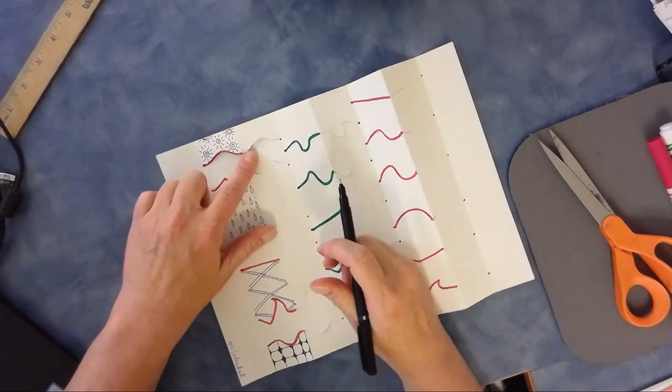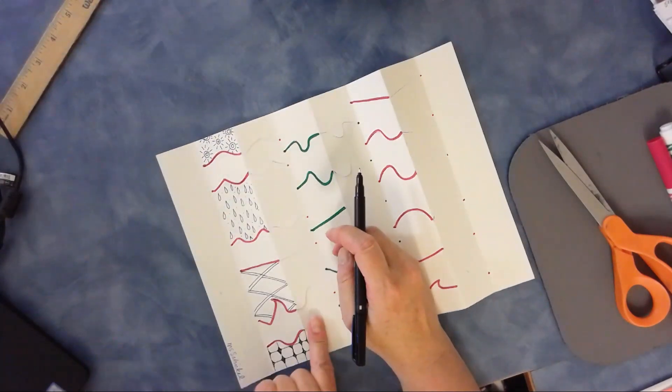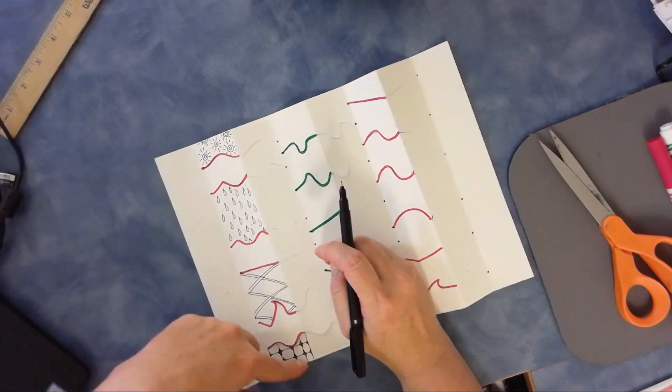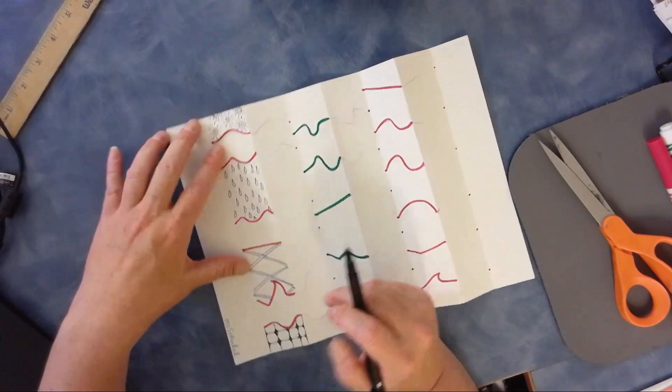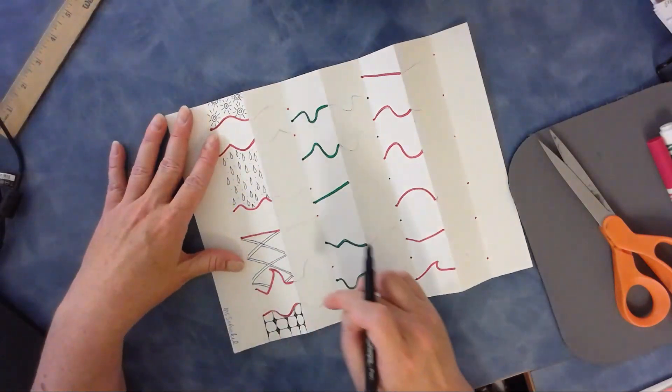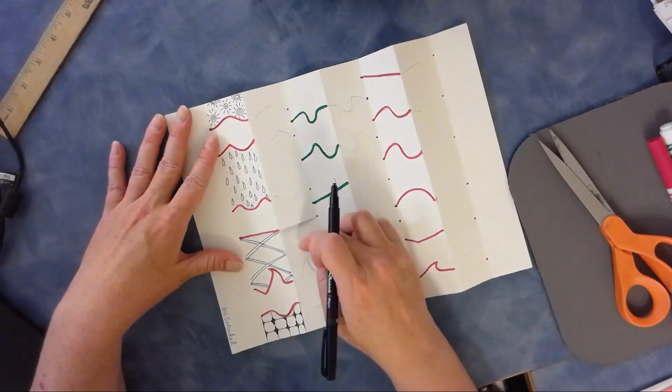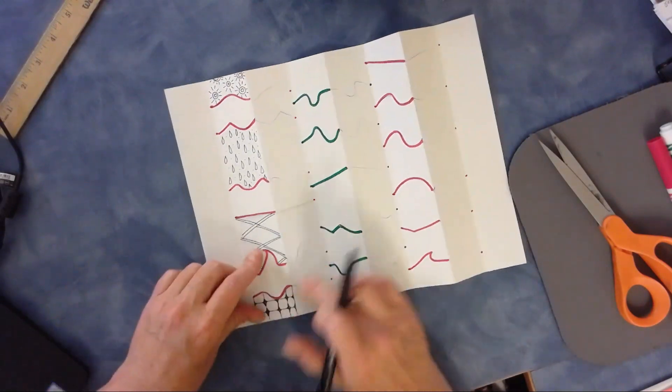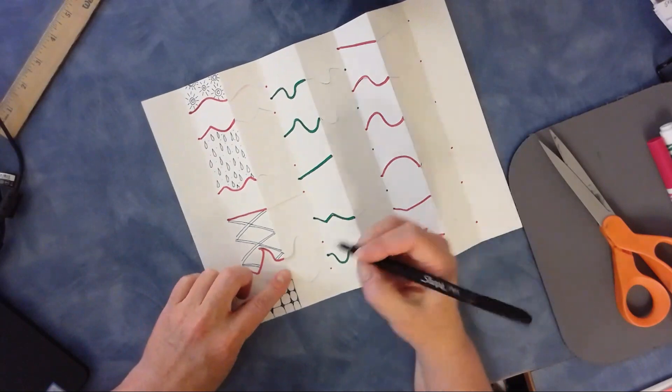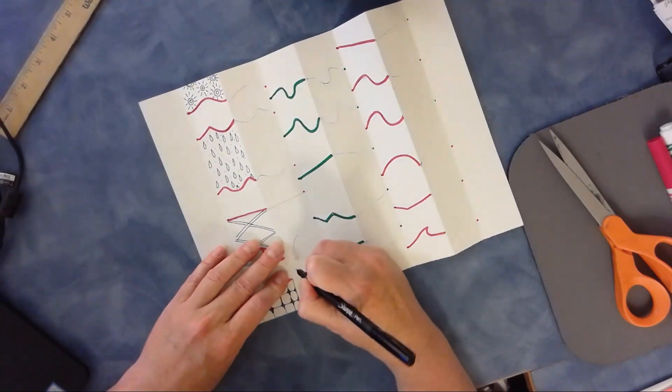So moving into my next strip here, my pattern of patterns has to be opposites. So I did this A-B, so now I'm going to do B-A. So I'm going to be opposites. Here I'm going to do a pattern based on an animal.